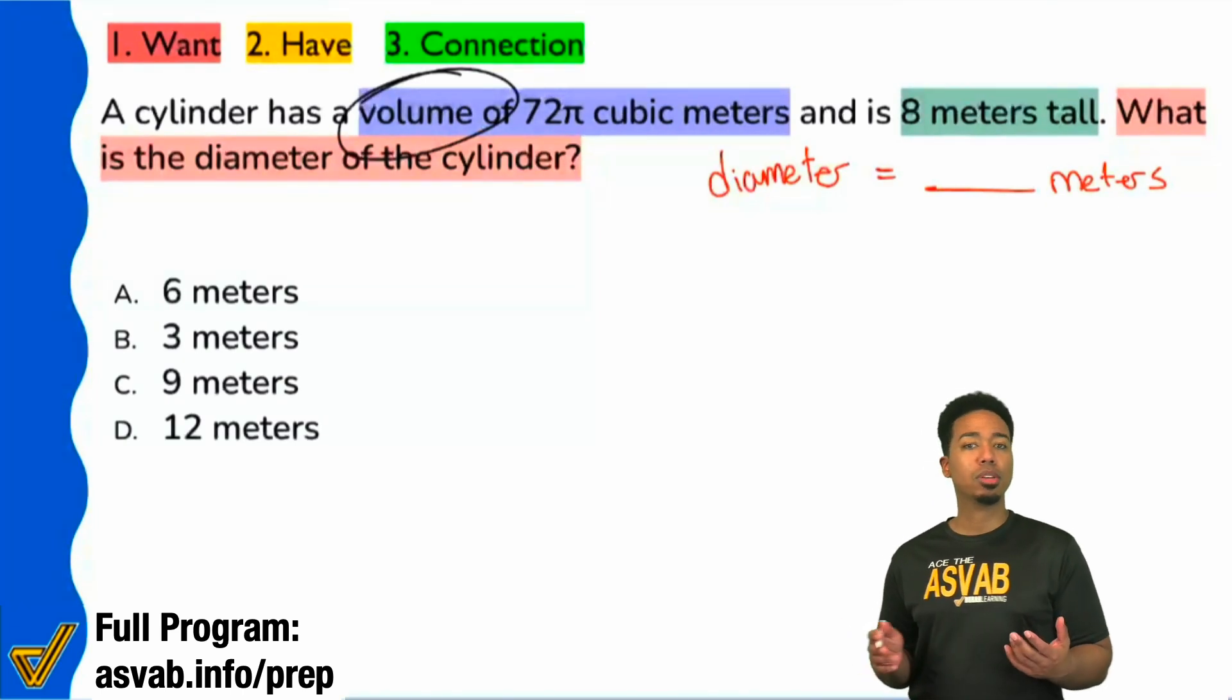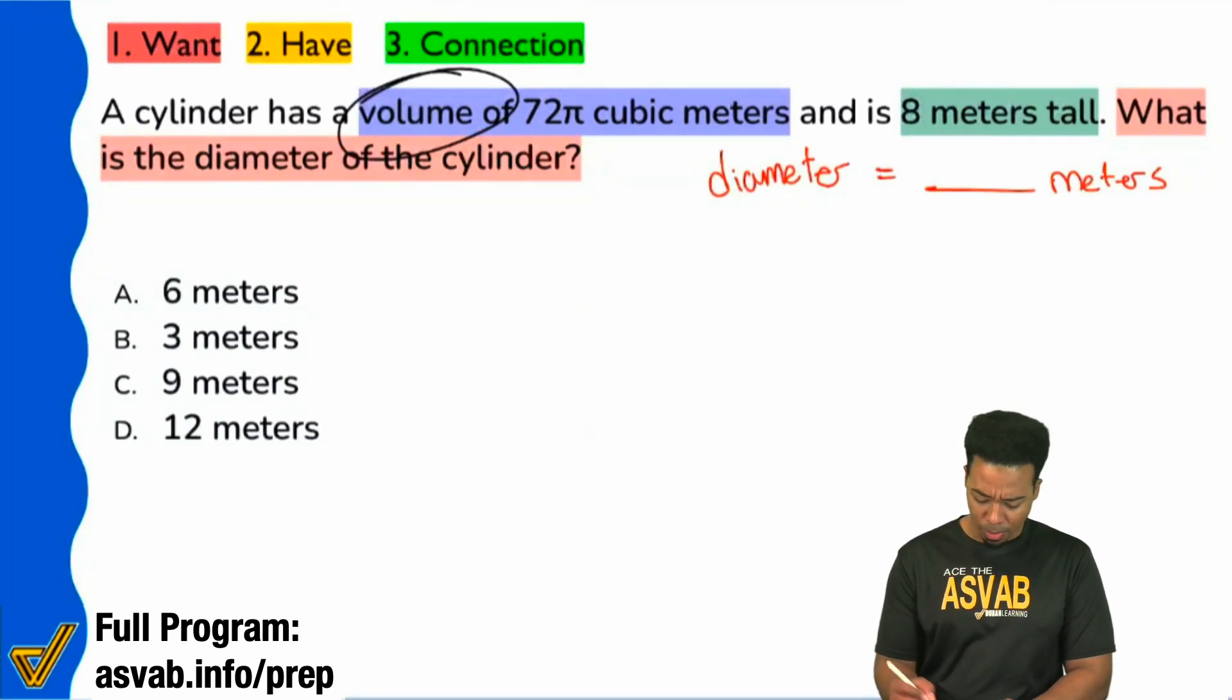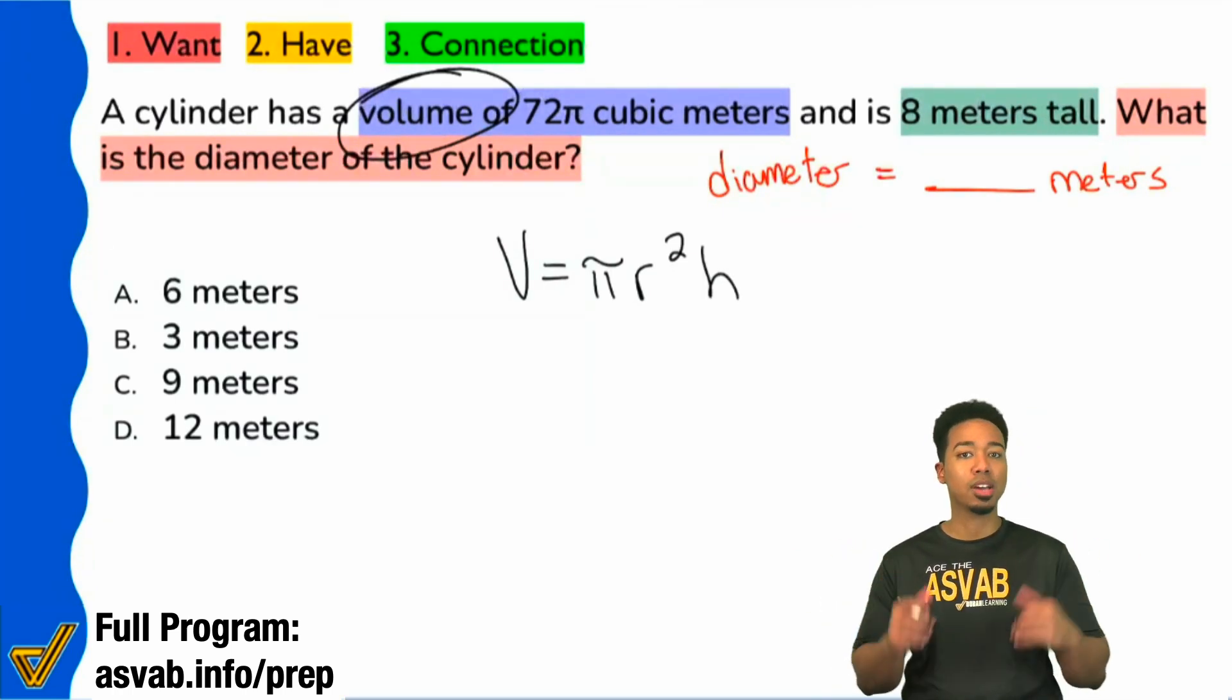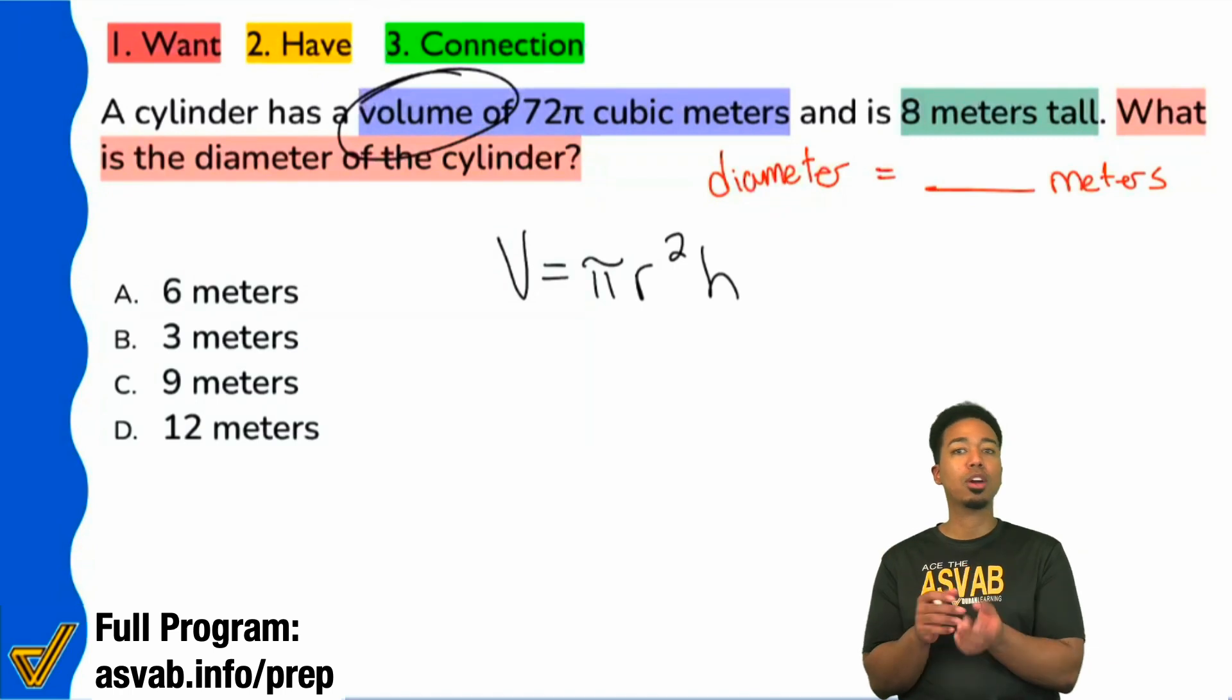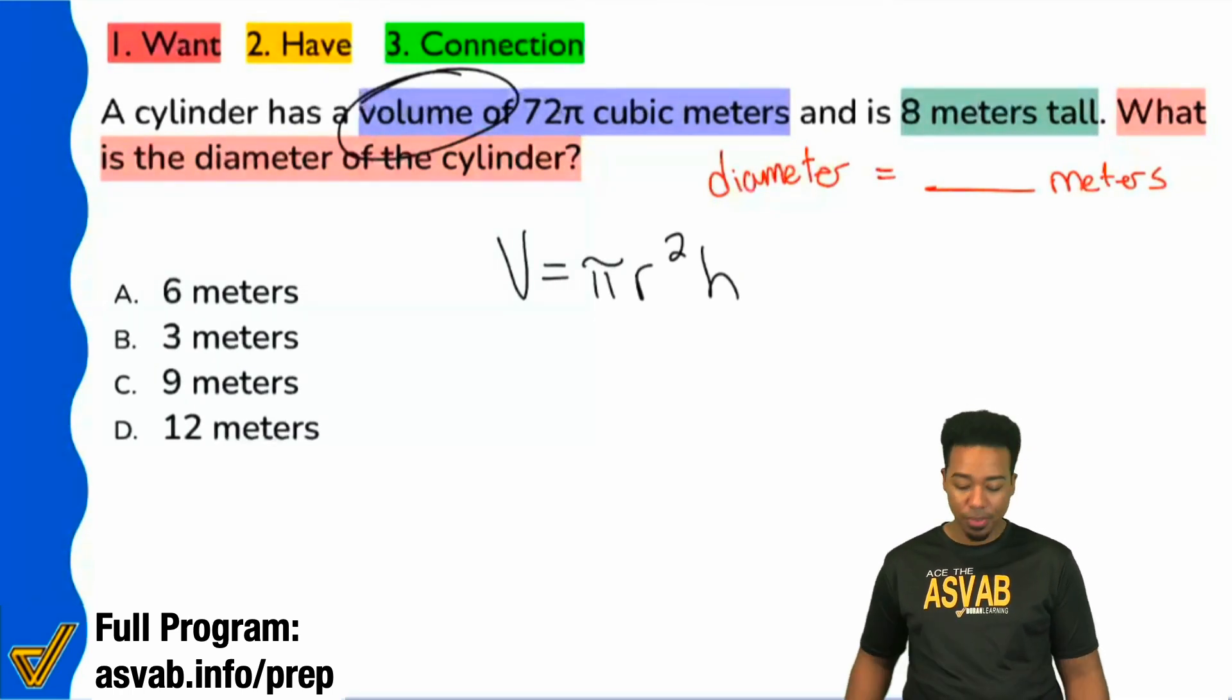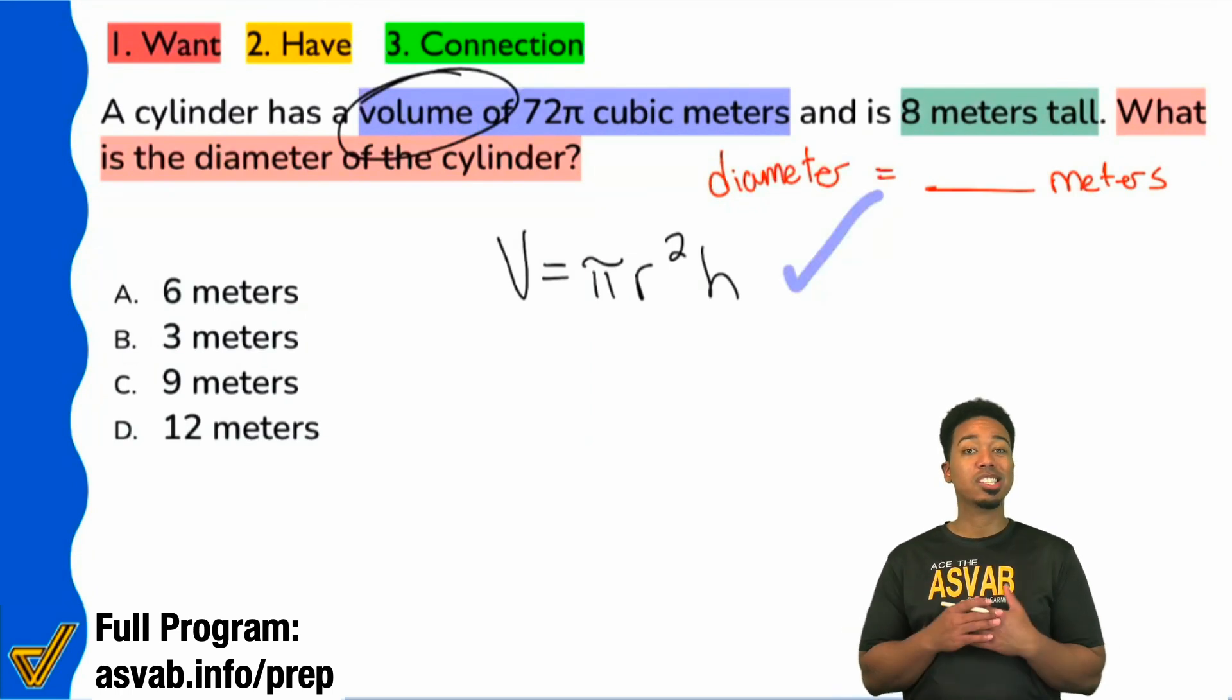If you didn't know the formula, here it is. It is volume equals πr²h. Everything there is being multiplied together. The π, the r squared, the h, all three of those are being multiplied together. Now you're going to see that this problem actually isn't that tough if you know your formulas. If you know your formulas, this is a quick one.